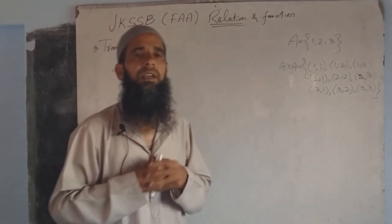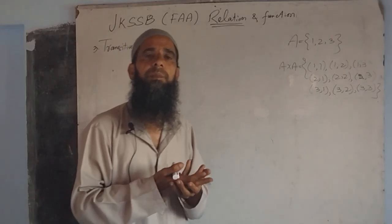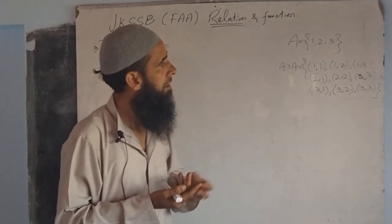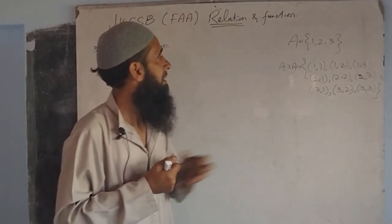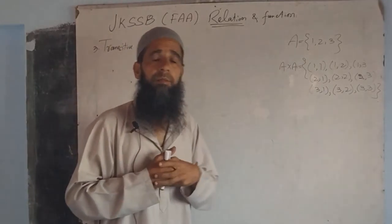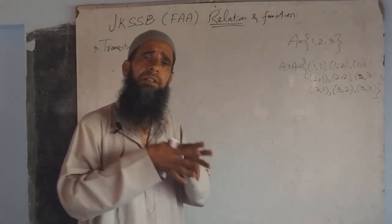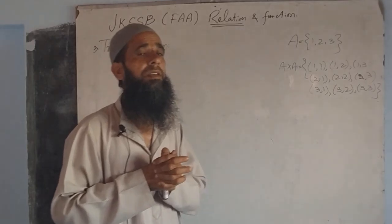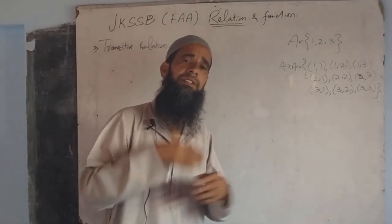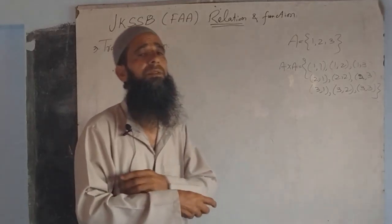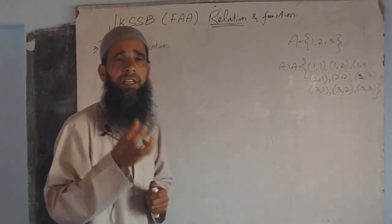When a relation is defined, we take a given set A and B. If we have a set, we have the Cartesian product. If we have the Cartesian product, we have the subsets of the Cartesian product of a given set. From these subsets, we have relations.